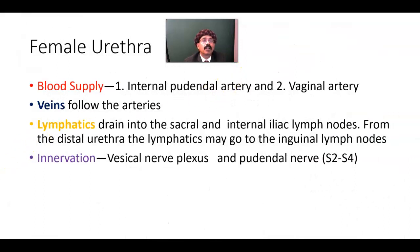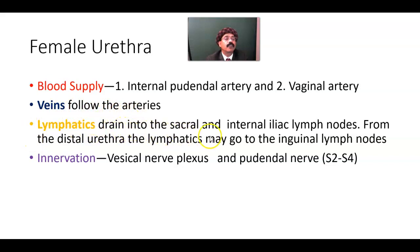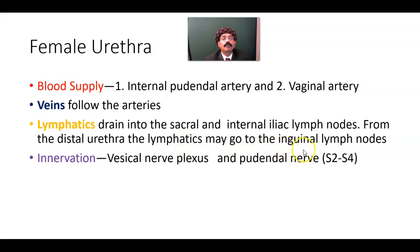The blood supply of the female urethra comes from the internal pudendal artery and the vaginal artery. Veins follow the arteries. Lymphatics drain into the sacral and internal iliac lymph nodes, while from the distal urethra, lymphatics may drain to the inguinal lymph nodes.